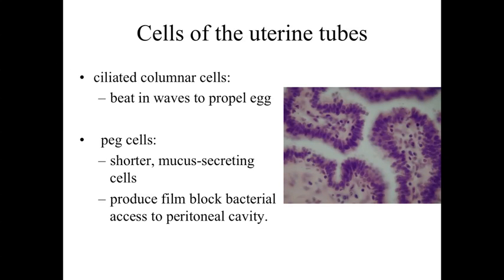If we take a look at the cells lining the uterine tubes, we're going to see ciliated columnar cells — a simple columnar epithelium with cilia along the surface. These cilia have microtubule cores with little protein motors involved with them. They're going to allow the cilia to beat back and forth, which is going to propel the egg from where it's picked up near the ovary towards the uterus. We're also going to see smaller non-ciliated cells, referred to as peg cells.